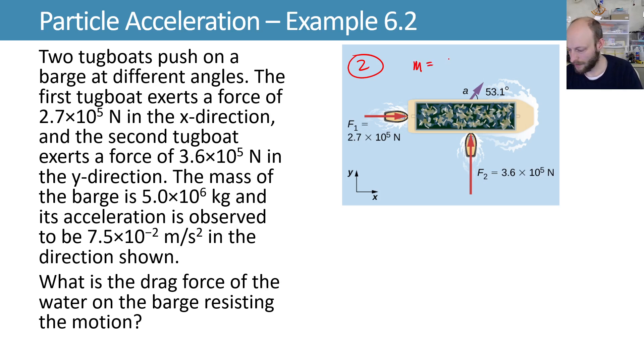It looks like 5 times 10 to the sixth kilograms worth of mass for the barge. And the acceleration is observed to be a certain magnitude as well. There it's going at the direction shown, that 53.1 degree angle, with a magnitude of 7.5 times 10 to the minus 2 meters per second squared. So kind of a slow acceleration, but it's a large barge. What do you expect?